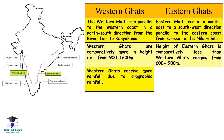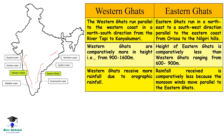The Western Ghats receive more rainfall due to orographic rainfall. Rainfall received by the Eastern Ghats is comparatively less because the monsoon winds move parallel to the Eastern Ghats.